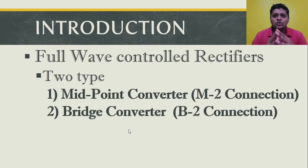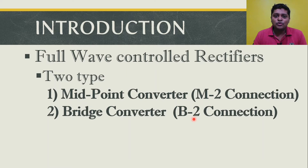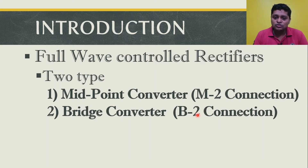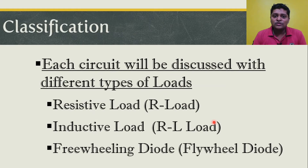Fully controlled converters are also called pulse converters. They are named M2 connection and B2 connection — M stands for midpoint, B for bridge, and 2 stands for the number of pulses produced per cycle. When the input completes one cycle, the output produces two pulses, utilizing both positive and negative halves. That's why they are also known as two-pulse converters. We will study these with resistive load, inductive load, and freewheeling diode.